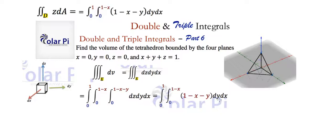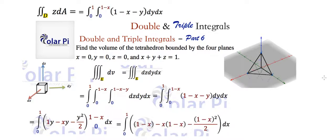Now we integrate with respect to y. Anything that doesn't have a y is treated like a constant. When we integrate with respect to y, we get 1 times y minus x times y (because x is a constant), minus y squared over 2, evaluated from 0 to 1 minus x. We plug in 1 minus x for y. Plugging in 0 annihilates everything, so here is the result.